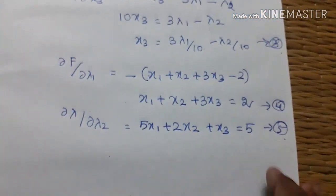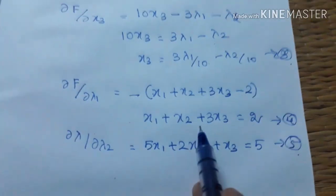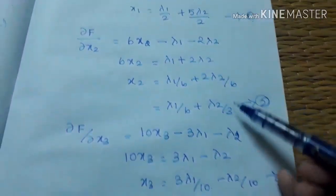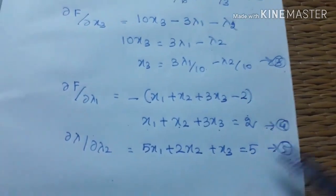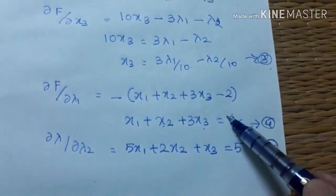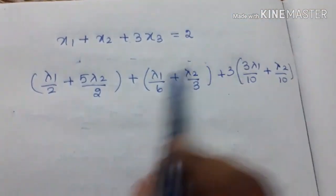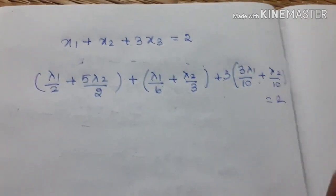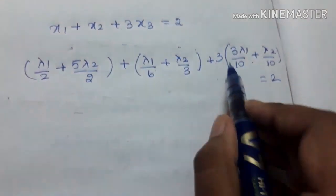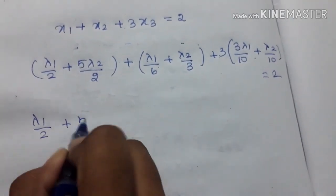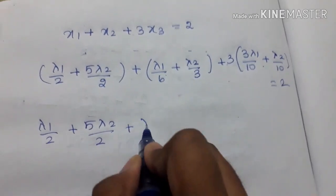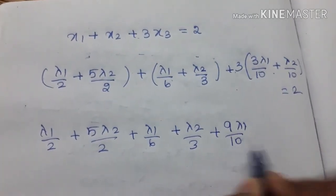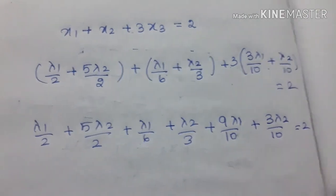Now we go to the fifth equation. In the fourth equation, we will substitute the x1, x2, x3 values. So substituting into x1 plus x2 plus 3 times x3 equals 2: lambda1 by 2 plus 5 lambda2 by 2, plus 9 lambda1 by 10 plus 3 lambda2 by 10 is equal to 2.